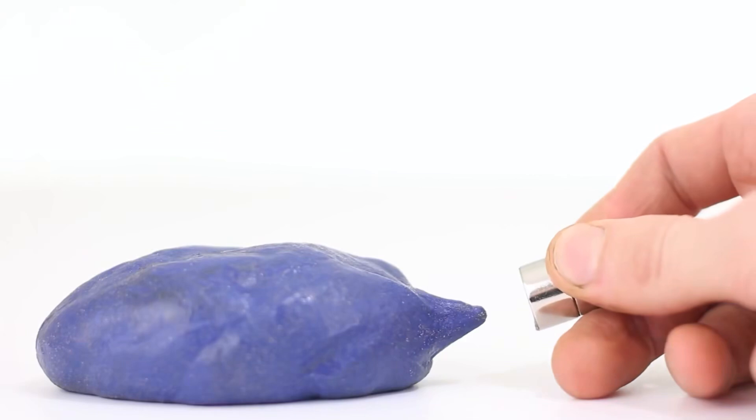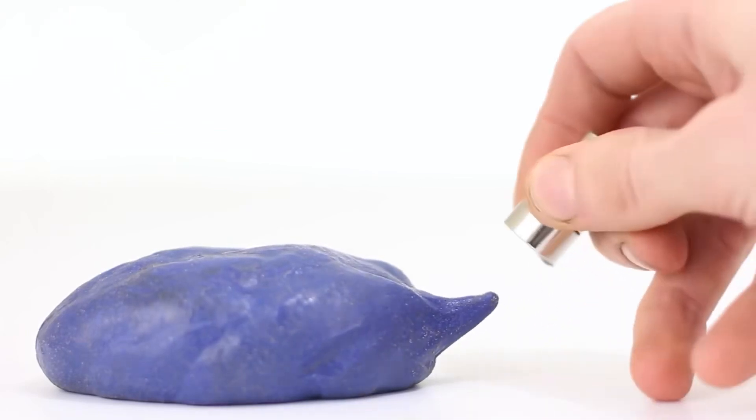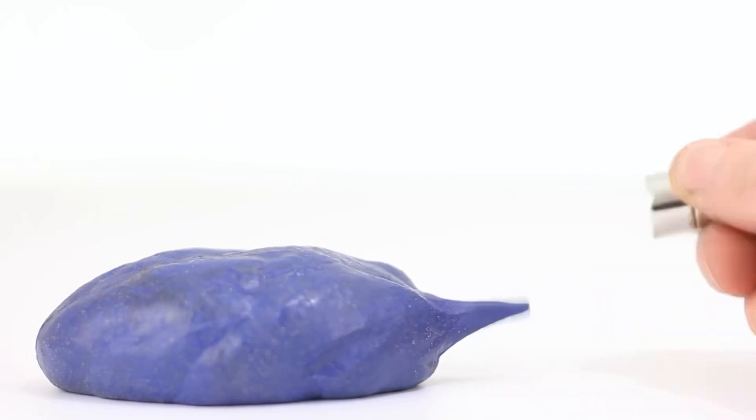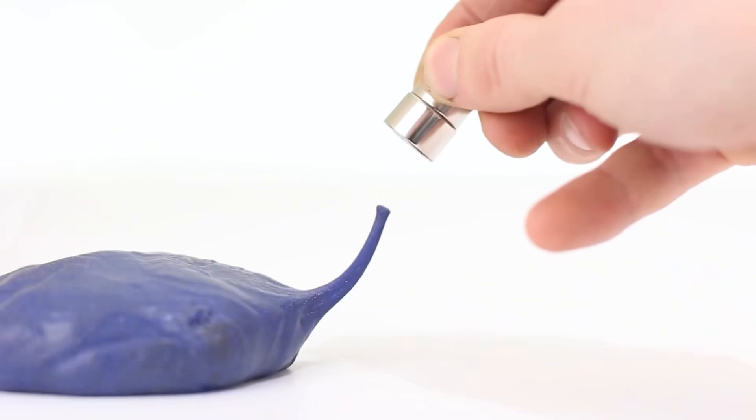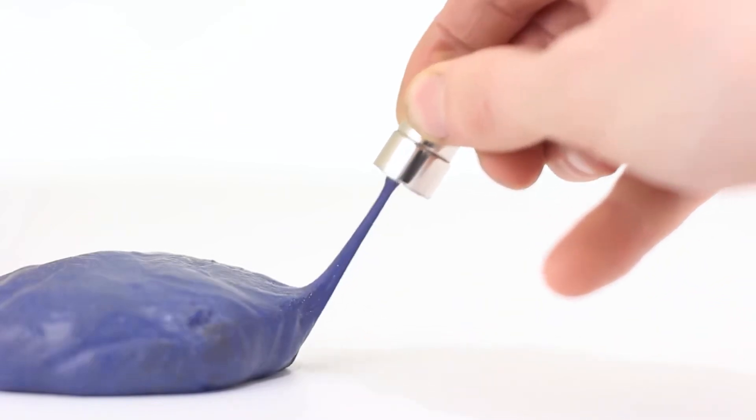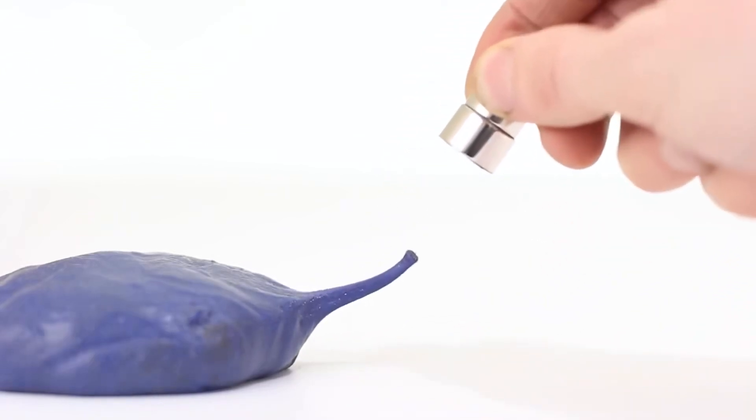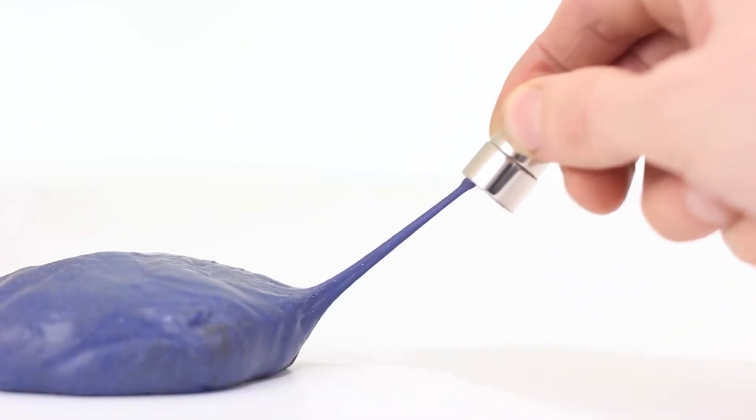Holding the magnet at a distance, you can see how the slime seems to be pulling a tentacle towards it. Because of this, it really looks like something alive. Just look how strongly this mass is drawn to the magnet. Much more interesting than your usual slime, right?